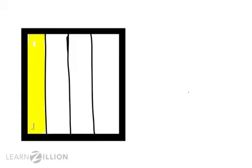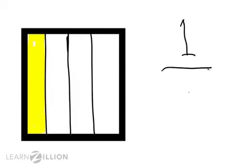When you write fractions, it looks like this. There's a number on the top called the numerator. The numerator is just the part we're thinking about. Since we are thinking about only the shaded part, that's one, so I would write one at the top. Then I would need to draw a line. Underneath the line is where I draw the denominator. The denominator is the total number of parts in the whole. Since there are one, two, three, four total parts, I would write four as the denominator.